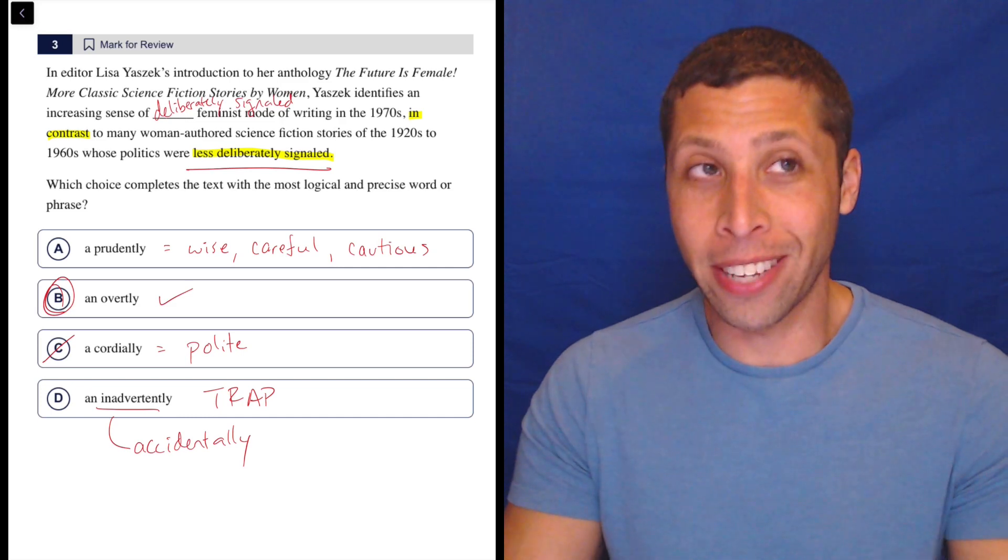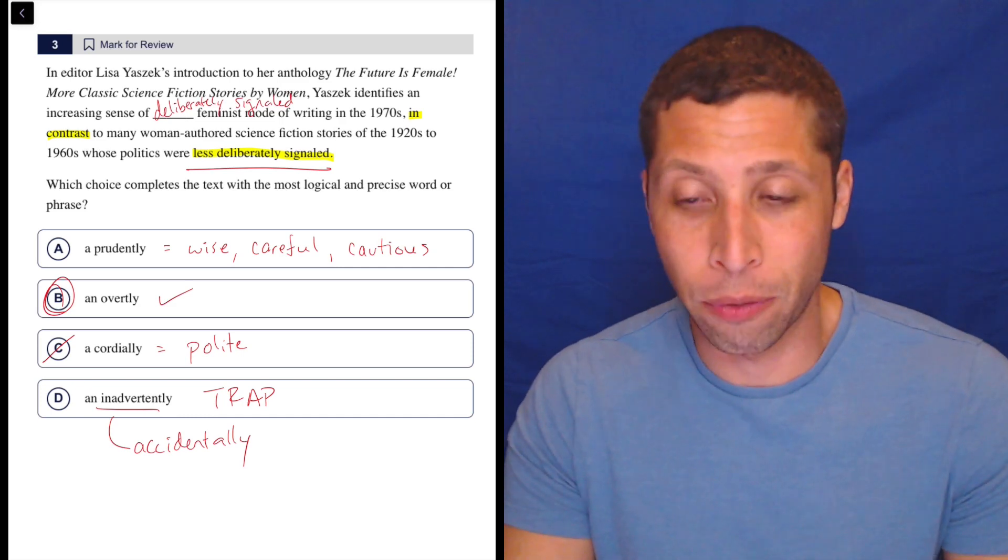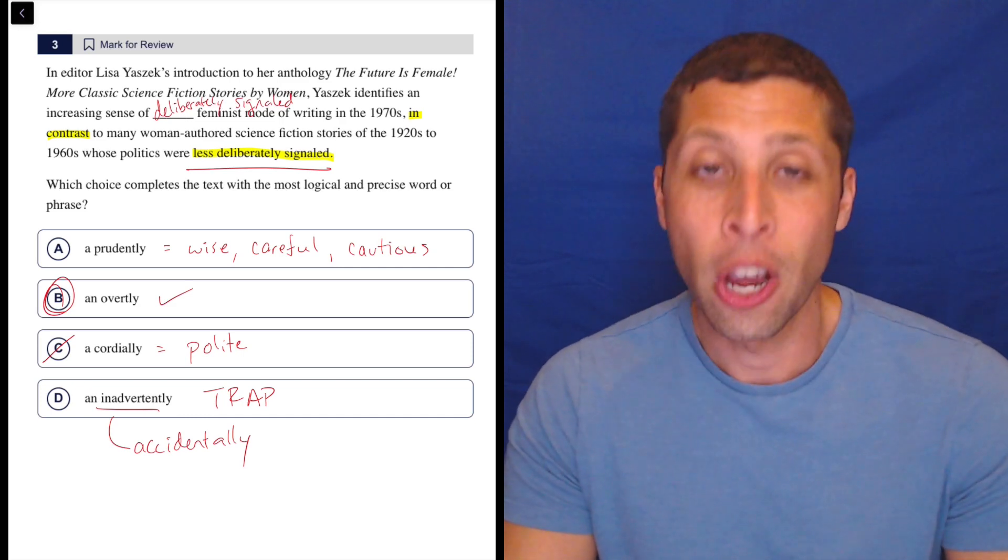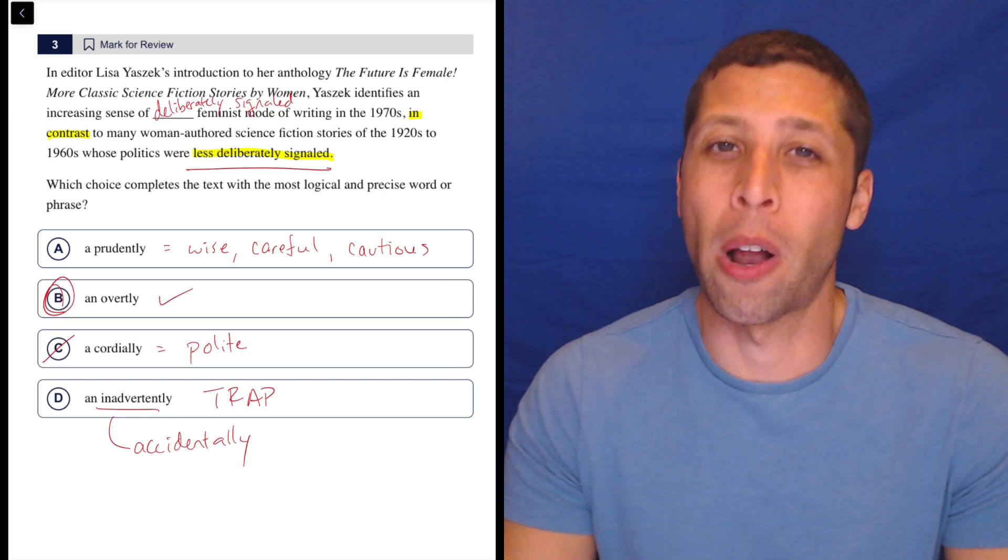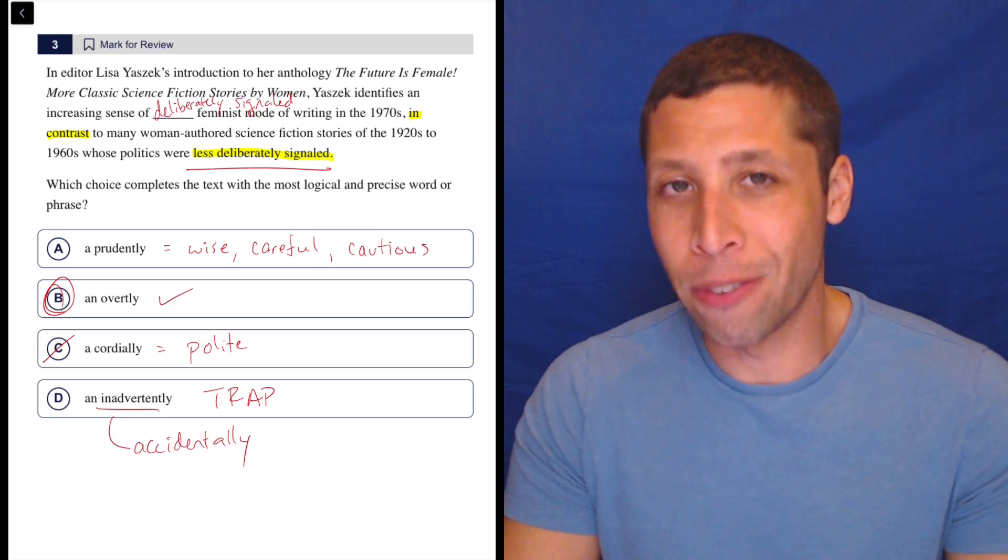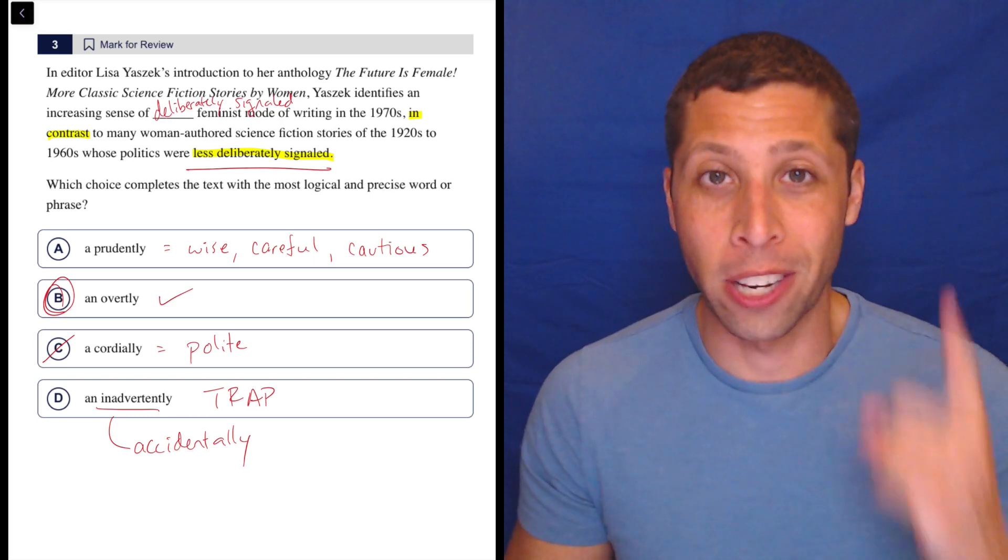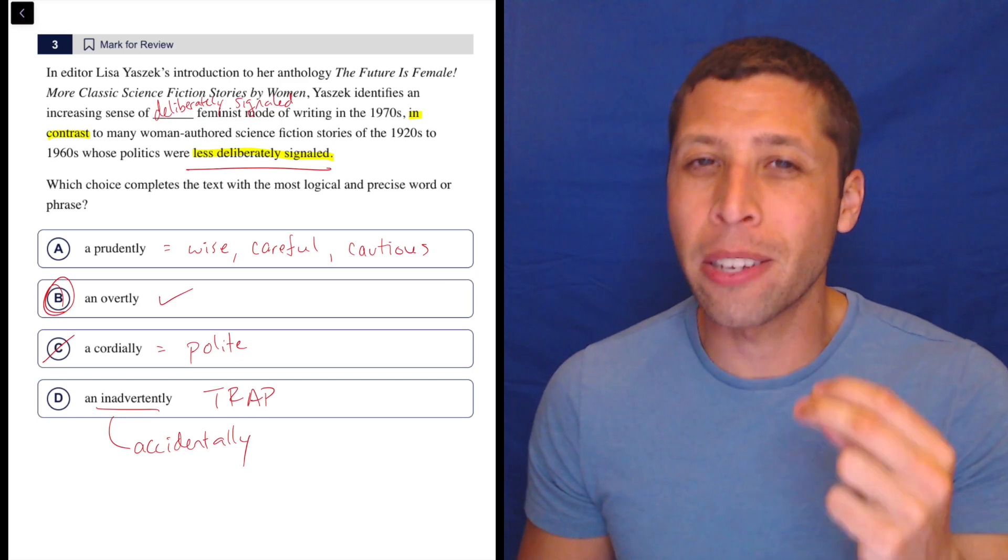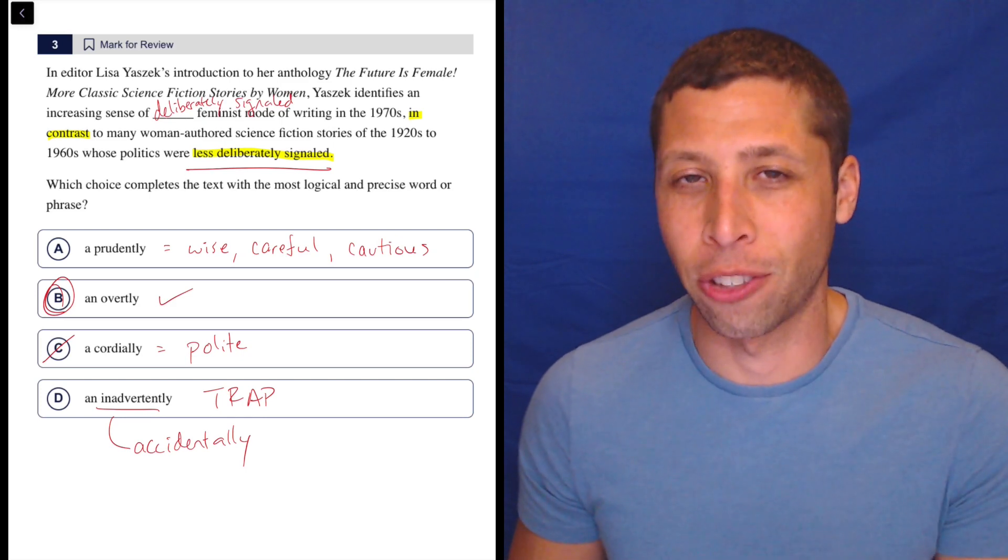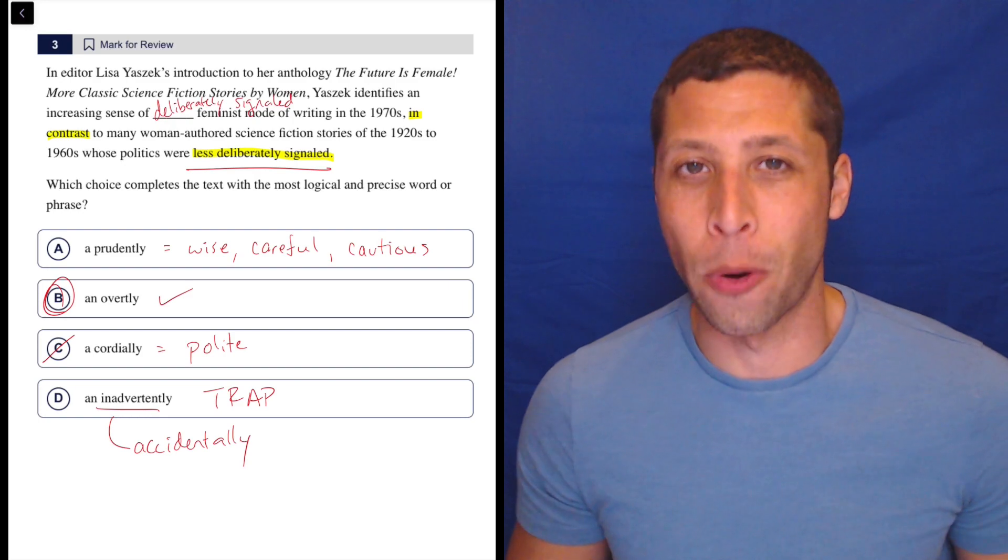But yeah, B is the answer here, because it literally is just the definition we're looking for. They gave us the definition in the passage, we do have some hard words. So if you got this wrong, I understand. But notice how the SAT is trying to make questions hard, giving you hard words, but also kind of messing with the logic and structure of the passage. So two things we've got to watch out for on vocab questions.